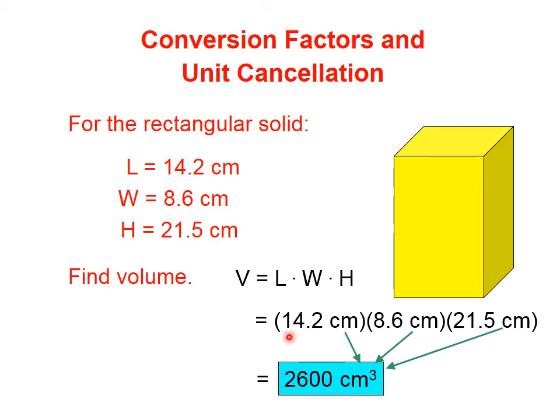This first quantity has three significant figures. This one has two. This one has three. Since we're multiplying them, we need to round to the fewest, which is two. 2600 cubic centimeters.